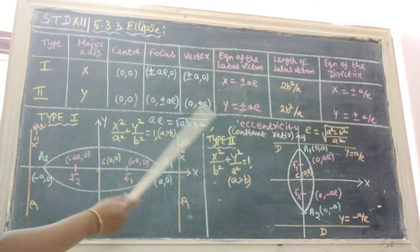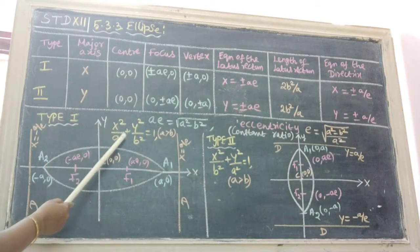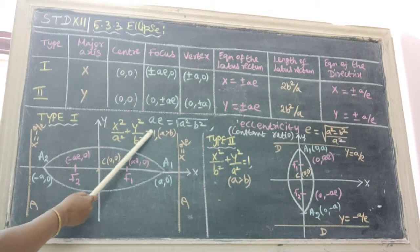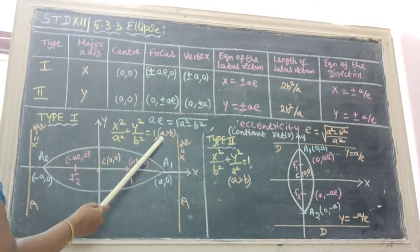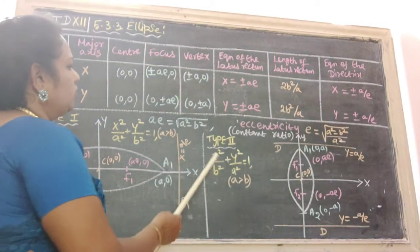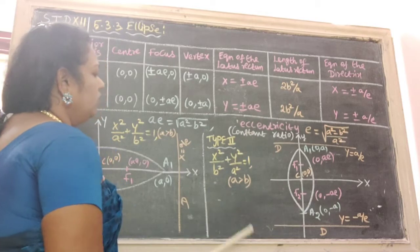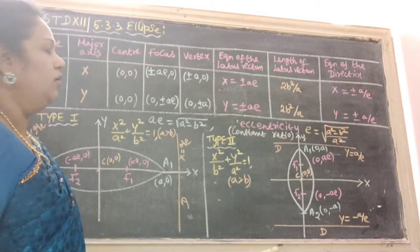There are two types, type 1 and type 2. Type 1 formula is x square by a square plus y square by b square equal to 1. Here the condition is a is strictly greater than b. Type 2 the formula is x square by b square plus y square by a square equal to 1. Here a is strictly greater than b.